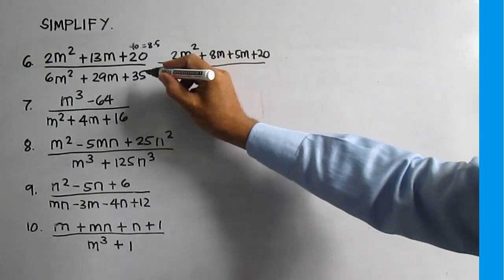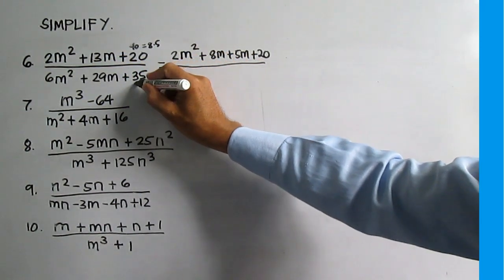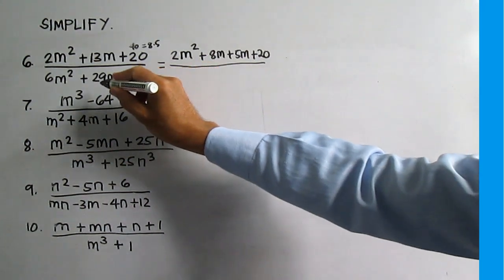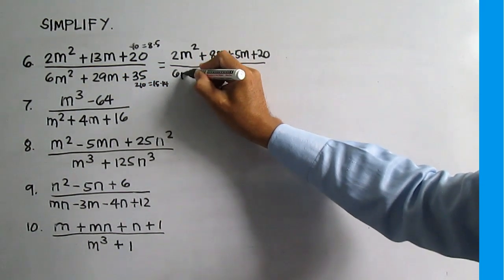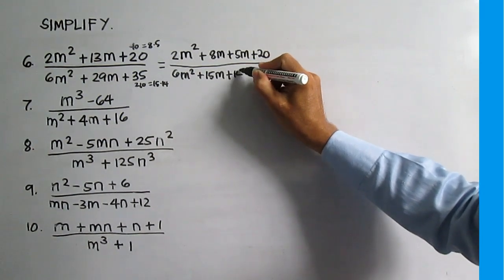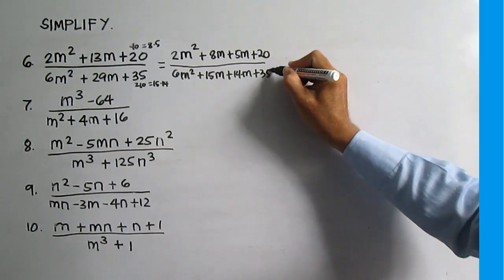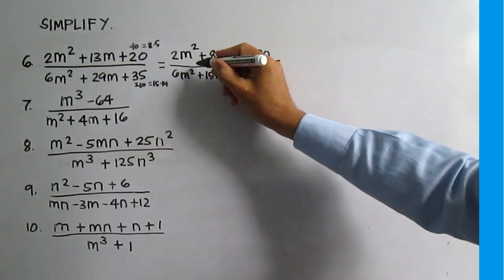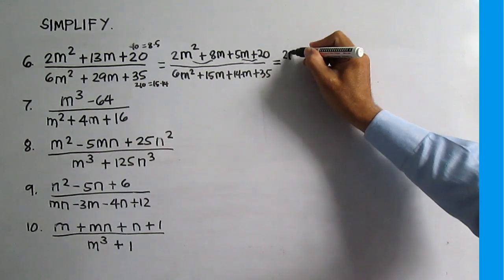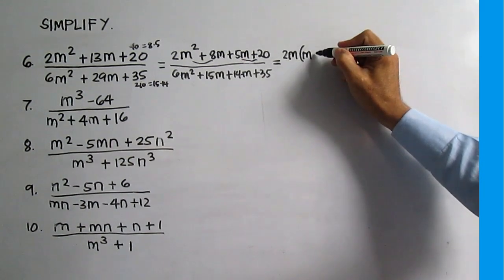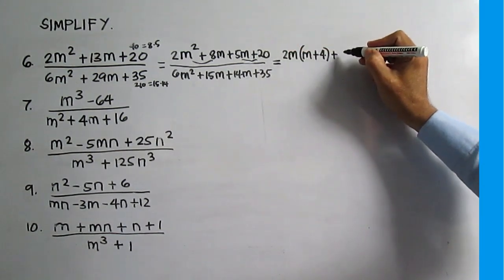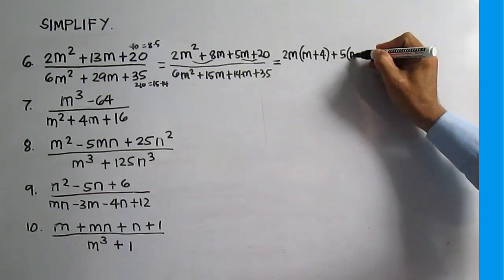The denominator is also a general trinomial. Using the AC method, 35 times 6 is 210. Think of two numbers that give a product of 210 and a sum of 29: 15 and 14. The denominator is 6M squared plus 15M plus 14M plus 35. Group the first two terms and the next two terms. The common factor is 2M and the other factor is M plus 4; the common factor is 5 and the other factor is M plus 4.